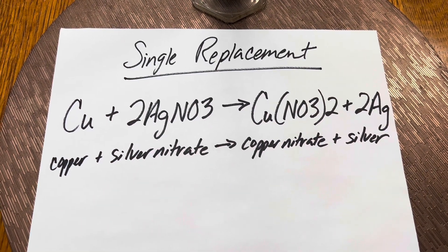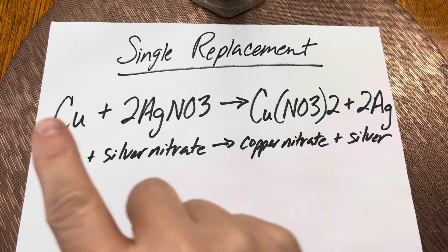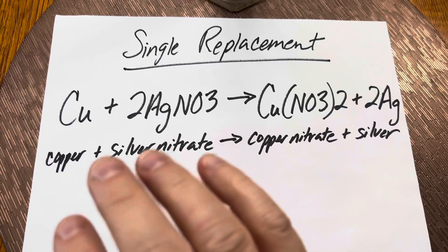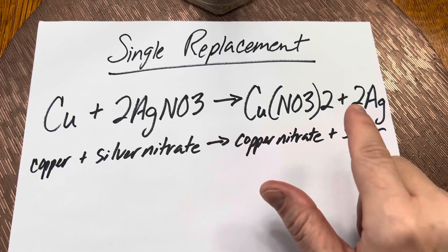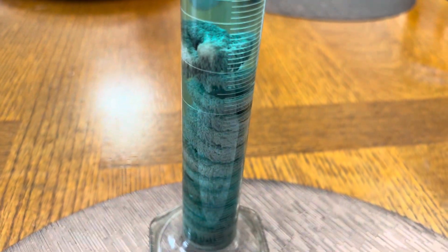So what's going on in this amazing single replacement reaction is you're adding copper to silver nitrate, and the copper is displacing the silver and becomes copper nitrate, and there's your silver that's precipitating in the solution right off the copper wire.